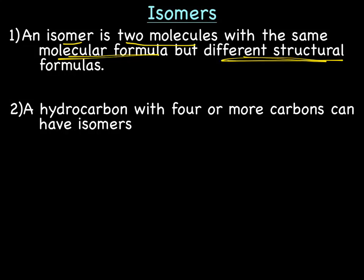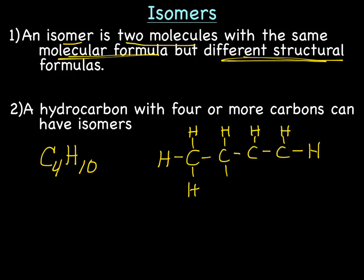I'm not going to show you all the isomers, but let's say we had C4H10, so we could have the basic 1, 2, 3, 4. So that's one example of a structure that's C4H10.